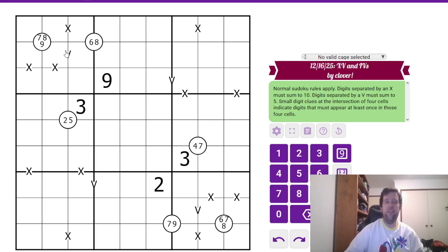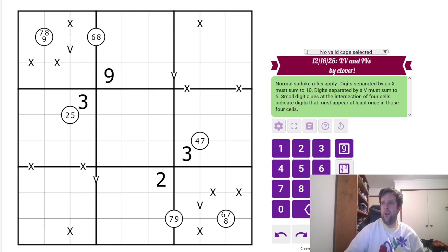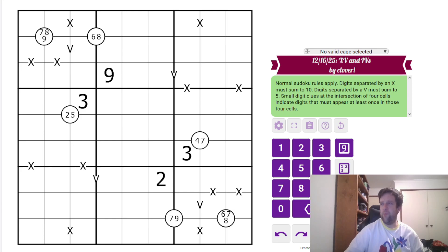This is XVs and IVs by Clover. That's better. So what is this? This is a normal Sudoku in some aspects. Normal Sudoku rules apply. Each box, each row, each column must contain one through nine once each.